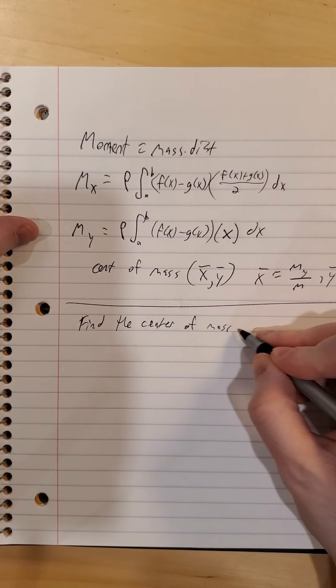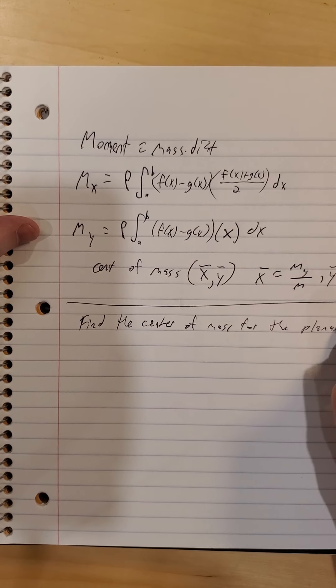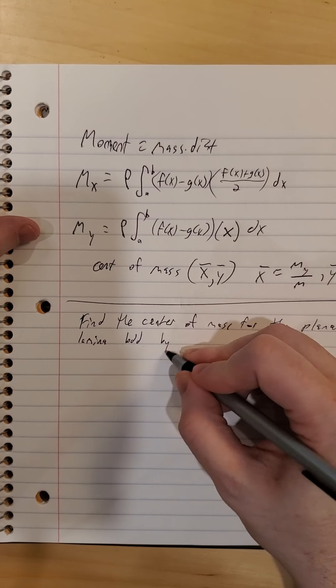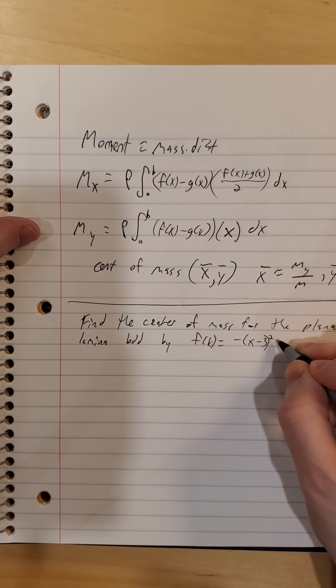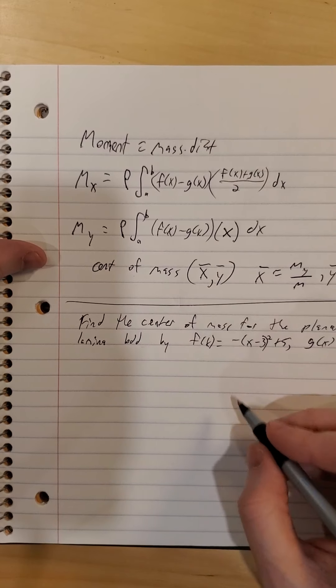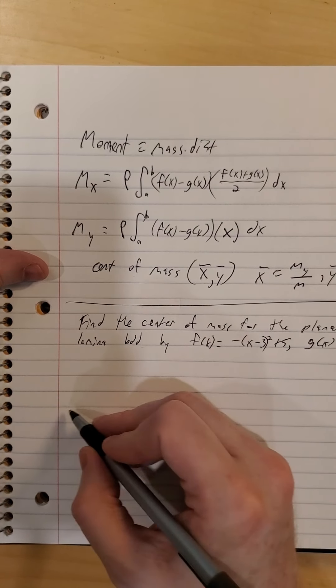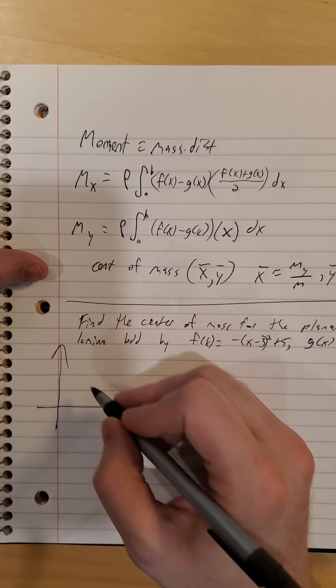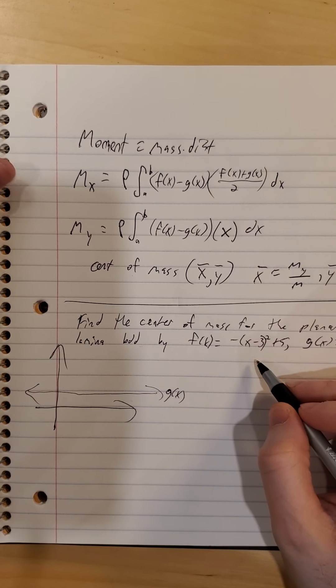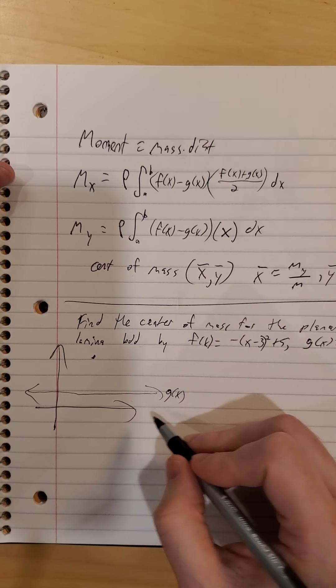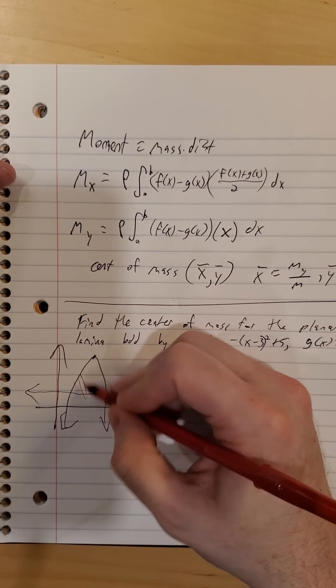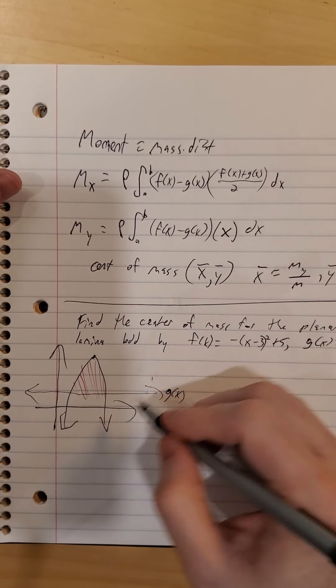So we're going to find the center of mass for the planar lamina, bounded by f of x is opposite of x minus 3 quantity squared plus 5 and g of x is 1. So a quick little sketch here. Here's our y equals 1 for the g of x. f of x is a parabola vertex at 3, 5 opening down. So this is the area that we're talking about. We want the center of mass of this area.